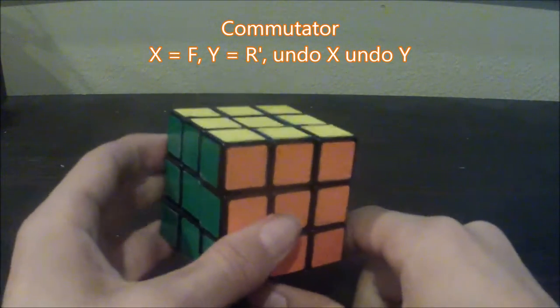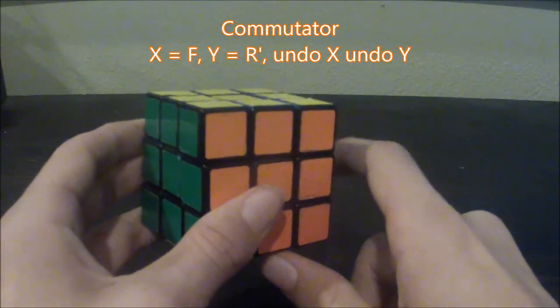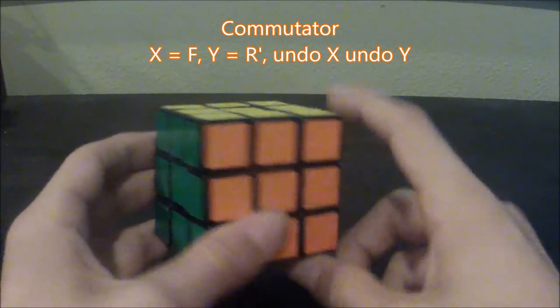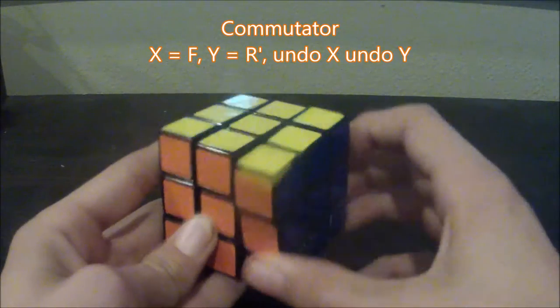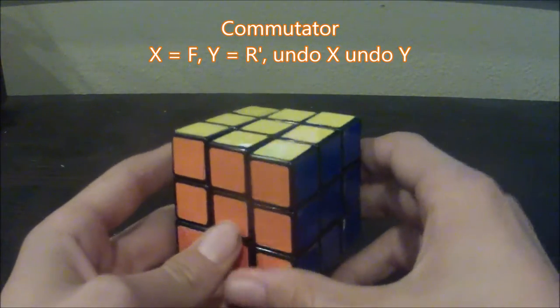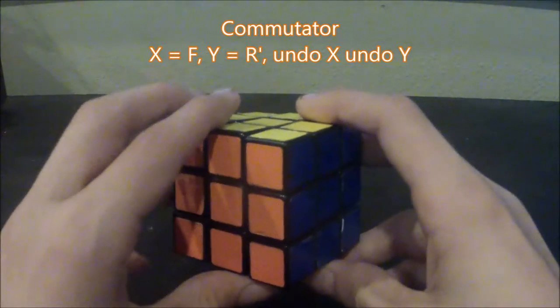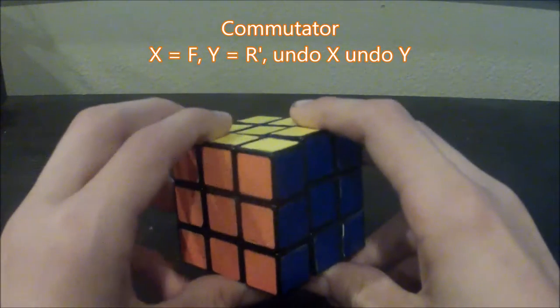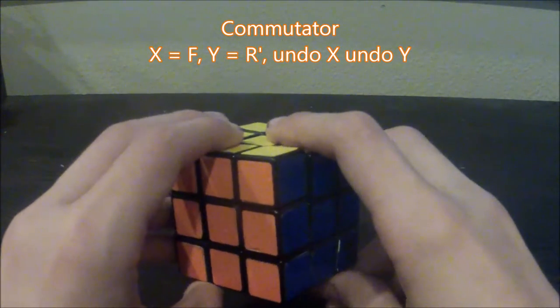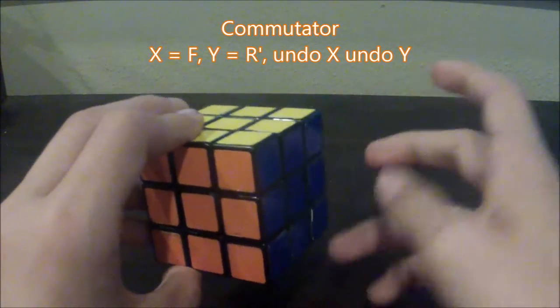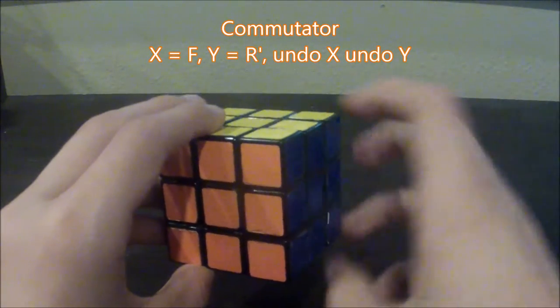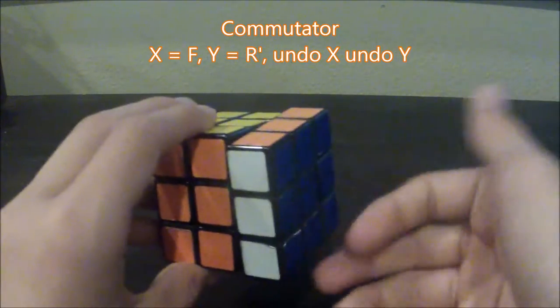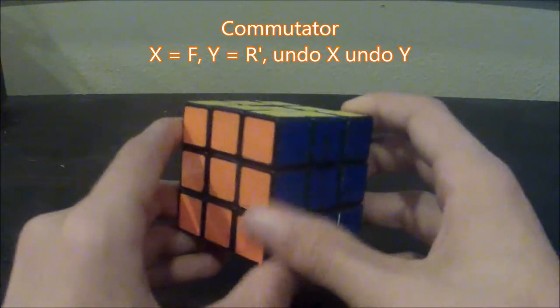As you can see in the commutator outline, X now represents a front turn, and the Y represents a counterclockwise right turn. That would mean undoing X would mean doing a counterclockwise front turn. And then undoing Y would be a clockwise right turn since the first one was counterclockwise.